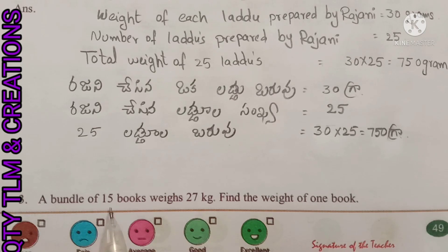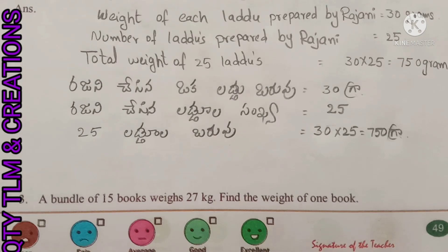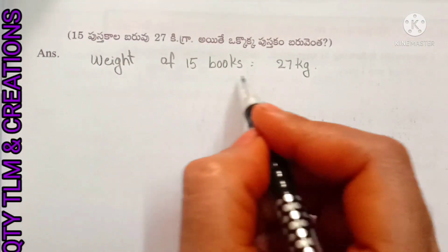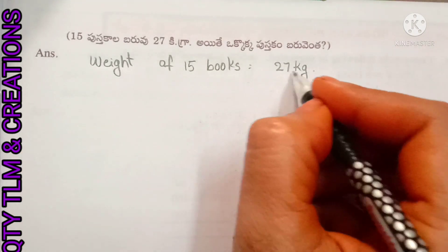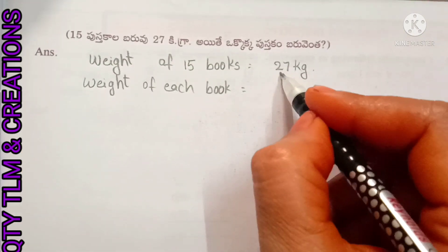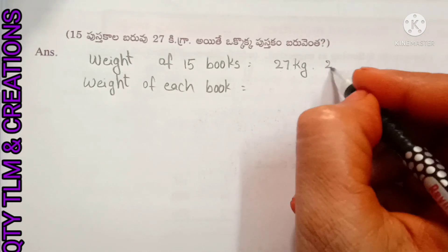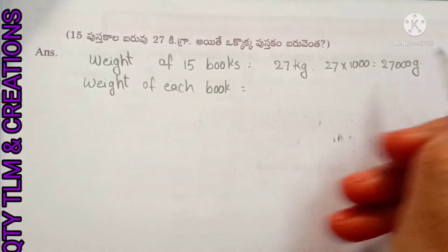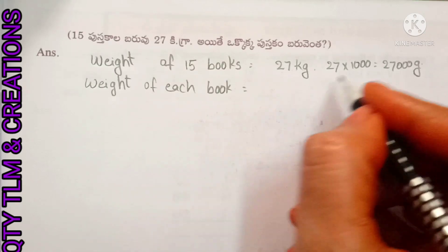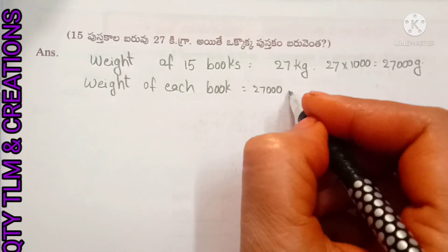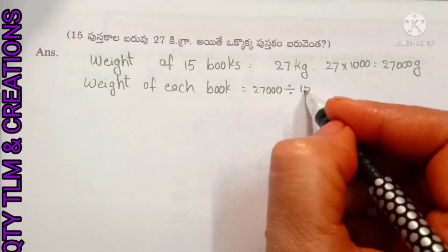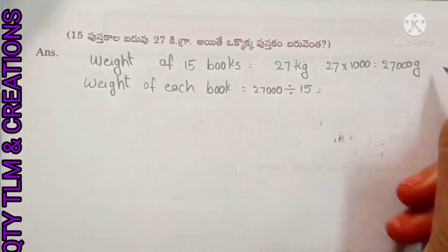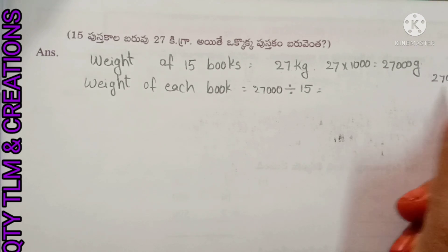Next question: a bundle of 15 books weighs 27 kilograms. Find the weight of one book. Weight of 15 books: 27 kilograms. Weight of each book equals 27 kilograms ÷ 15. First we convert 27 kilograms into grams: 27 × 1000 = 27,000 grams. Weight of each book equals 27,000 grams ÷ 15. We perform division: 27,000 ÷ 15.